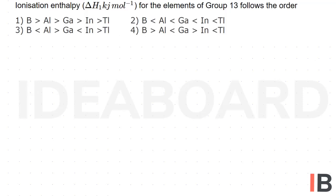Ionization enthalpy for the elements of Group 13 follows the order. In Group 13, the atomic size order is boron, then aluminum, and then gallium is decreasing its size, then again...